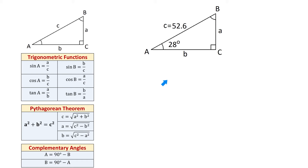Now let's go back to the problem we have to solve. We need to find side A, side B, and angle B. There are different ways to start this problem. If we know angle A and hypotenuse C, we can find side A using sine of A equals A over C, or find side B using cosine of A equals B over C. We could also find angle B first using B equals 90 degrees minus angle A. This seems to be the easiest step, so let's find angle B first.